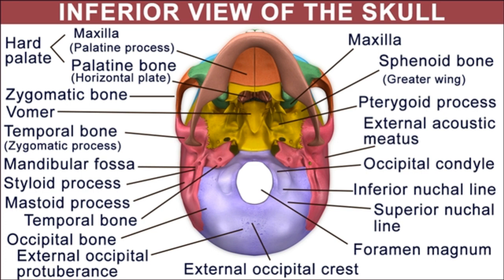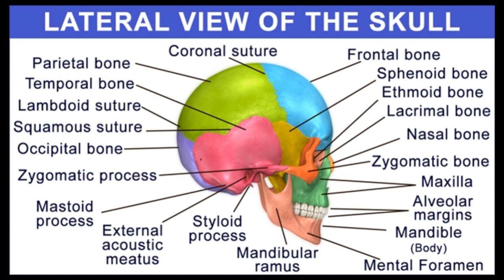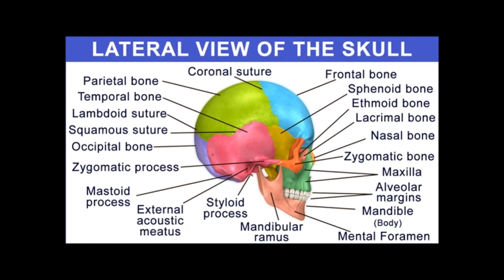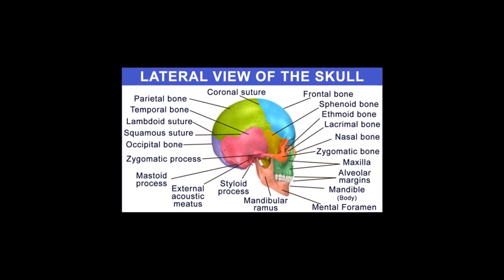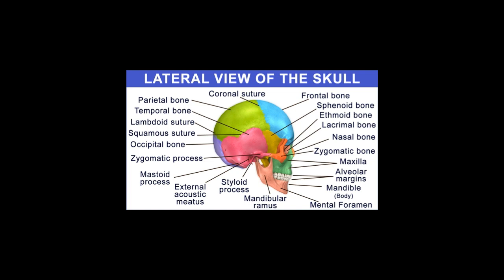The squama is an expanded plate located above and behind the foramen magnum. It is convex externally and concave internally. The major features of this region include the external surface. Located on the midline of the external surface, the external occipital protuberance is a prominence that can be felt on touching. It acts as a site of attachment for the trapezius muscle.